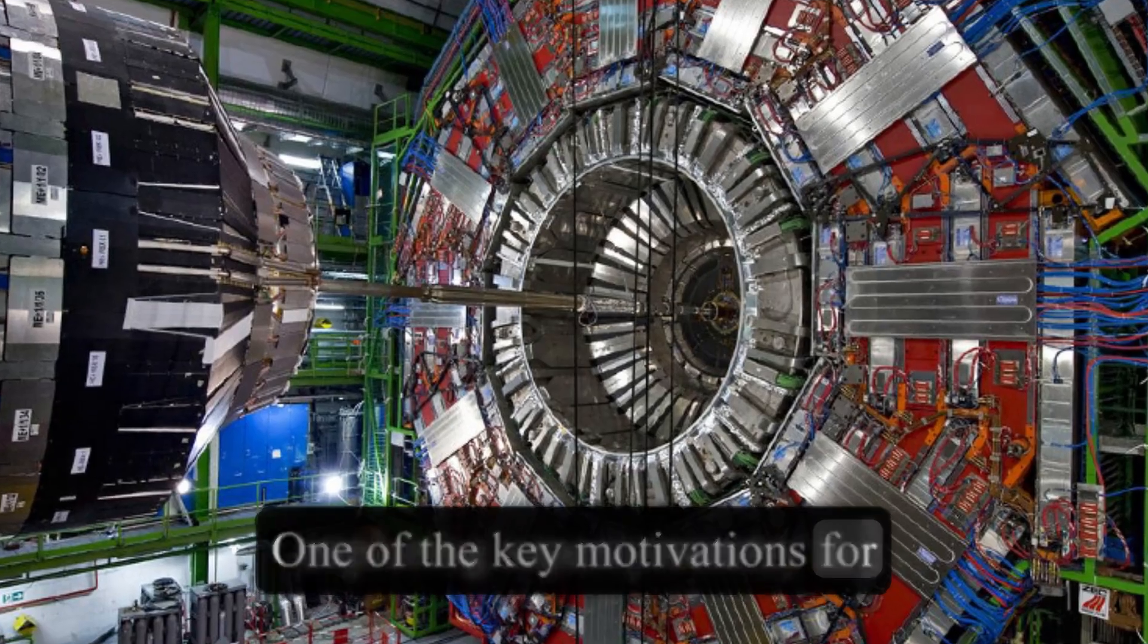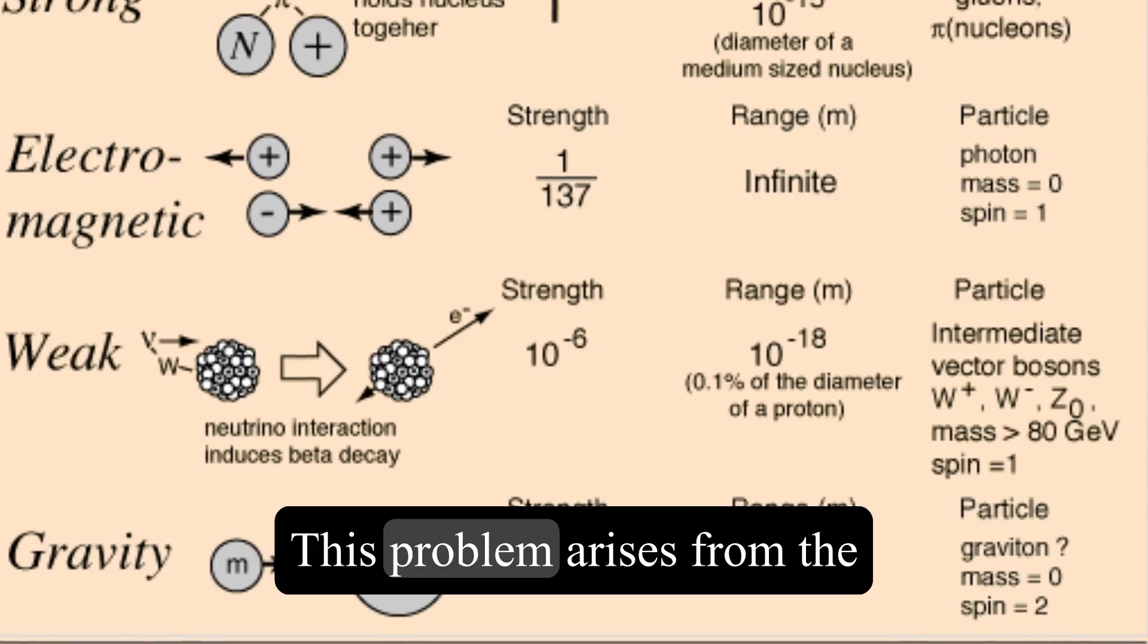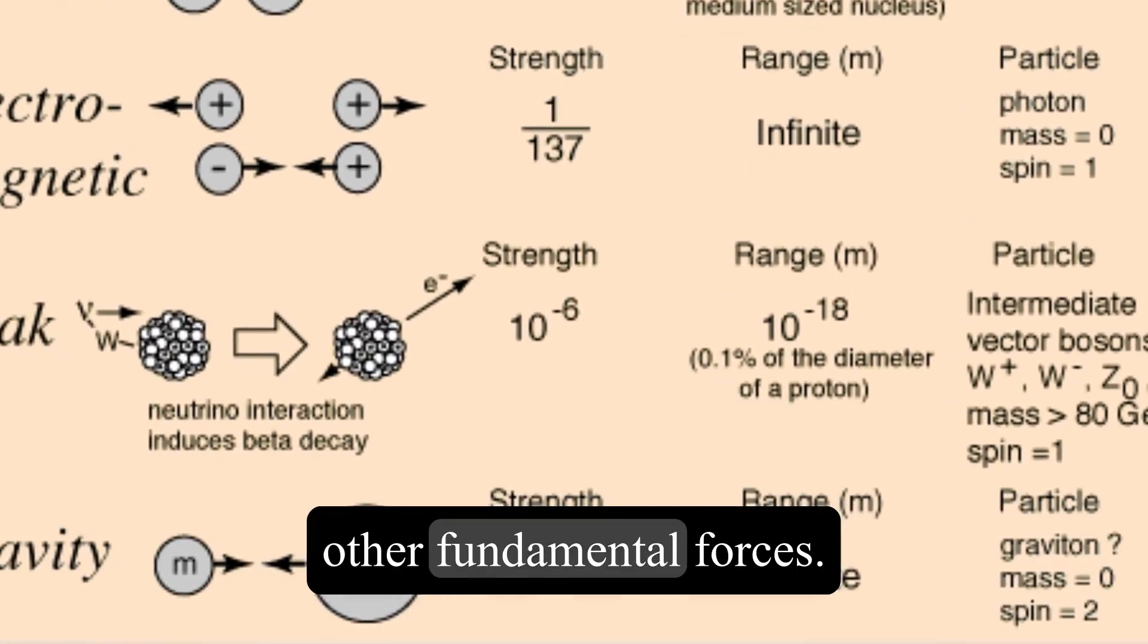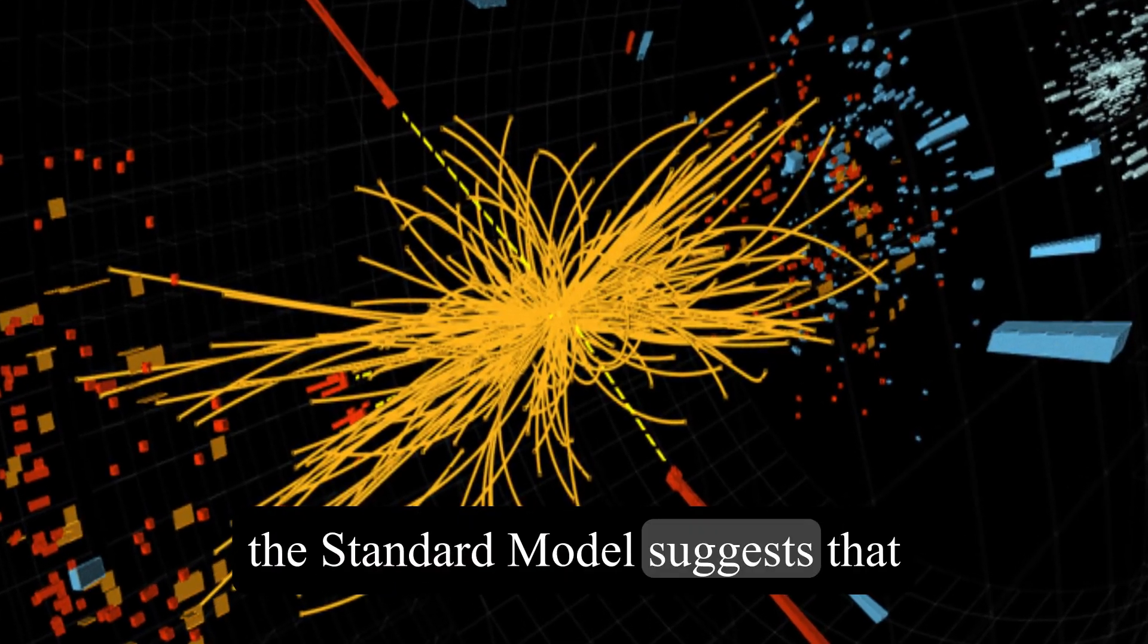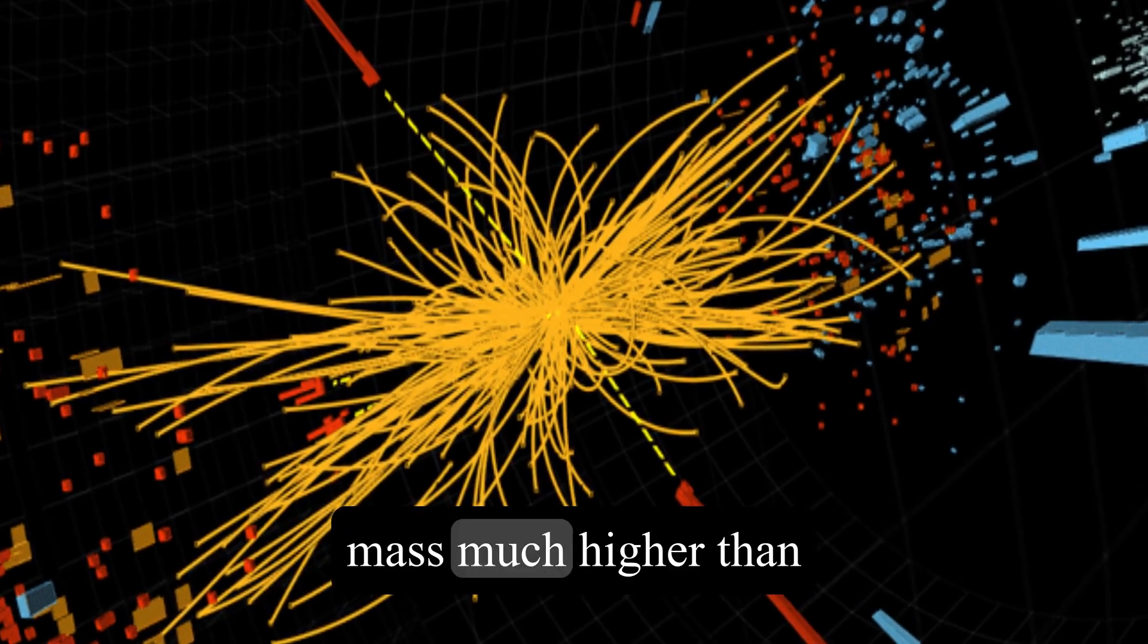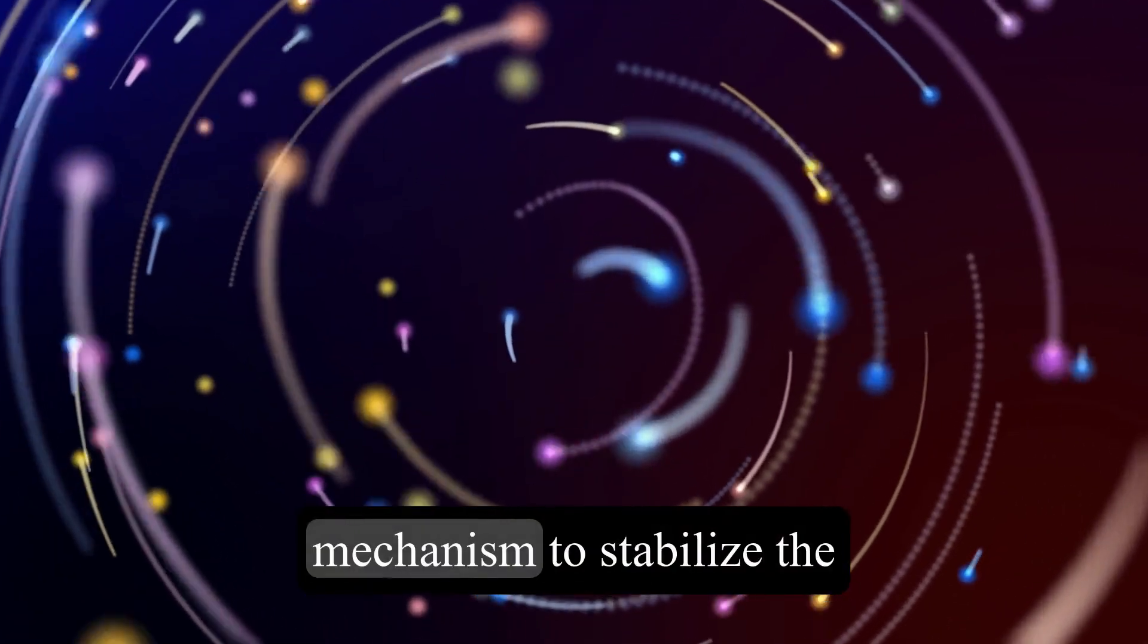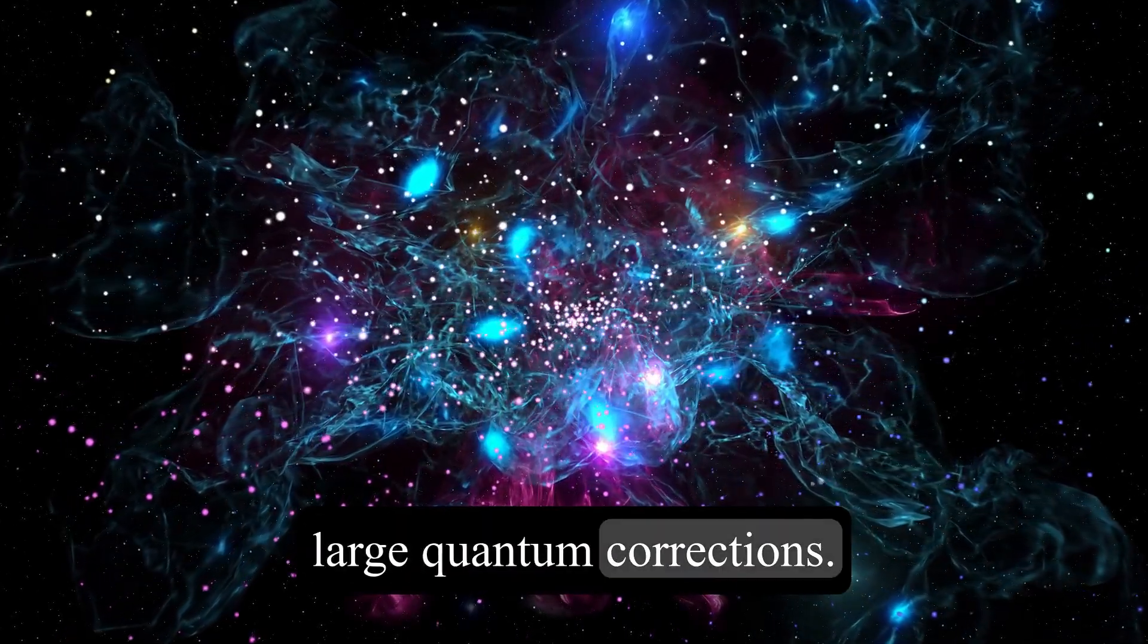One of the key motivations for exploring supersymmetry is the hierarchy problem. This problem arises from the vast difference between the gravitational force and the other fundamental forces. Without SUSI, the standard model suggests that the Higgs boson should have a mass much higher than what is observed.